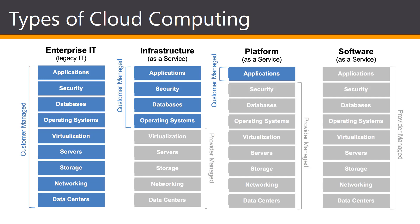The first is what's referred to as enterprise IT or legacy IT, where you manage everything on your own from the hardware all the way up to the applications. Moving to Infrastructure as a Service, or IaaS — this contains the basic building blocks for cloud IT and typically provides access to networking features, computers (virtual or on dedicated hardware), and storage space. IaaS provides you with the highest level of flexibility and management control over your IT resources, and is most similar to existing IT resources that many departments and developers are familiar with today.